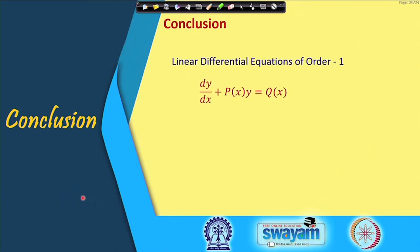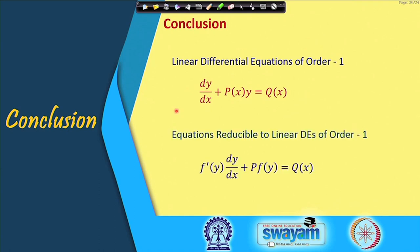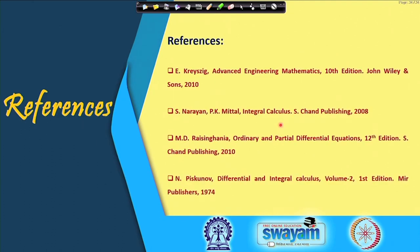In conclusion, we have gone through linear equations of order 1 in standard form dy/dx + P(x)·y = Q(x), and equations reducible to linear form. For the reducible case, if f(y) appears with P and f'(y) multiplies dy/dx, the substitution f(y) = v converts it to a linear equation in v, which we can then solve. These are the references used for preparing the lectures. Thank you for your attention.